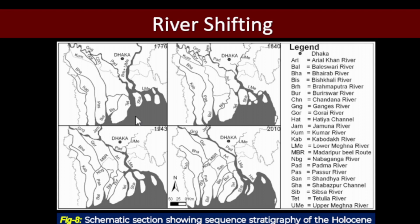River shifting plays a major role in building, shaping, and defining the characteristics of a delta. This figure shows the evolution of the delta and the major river course shifts in the last century. In 1776, the Brahmaputra and the upper Meghna moved through a single channel and connected with the Padma. By 1840, these two divided: the Brahmaputra moved westward and connected with the Ganga in the northern region, while the upper Meghna flowed separately and connected with the Padma in the south.